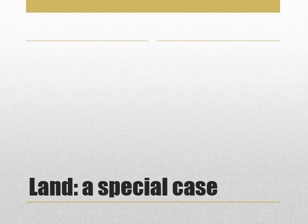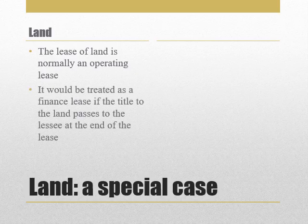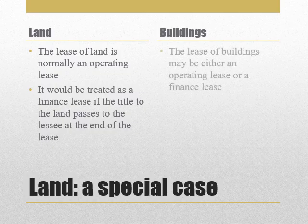A note about land: the lease of land is normally an operating lease. The most common exception is where the title to the land passes to the lessee at the end of the lease — under those circumstances we would treat it as a finance lease. But that situation is pretty rare, so normally the lease of land will be an operating lease. This does not hold for buildings, however. The lease of buildings can be either an operating lease or a finance lease, and we would look at the characteristics to see whether it substantially transfers the risks and rewards of ownership to the lessee.